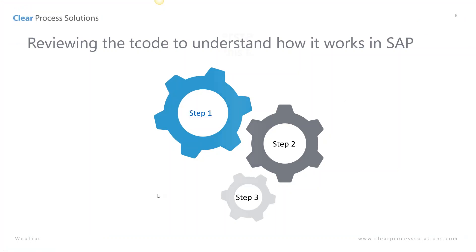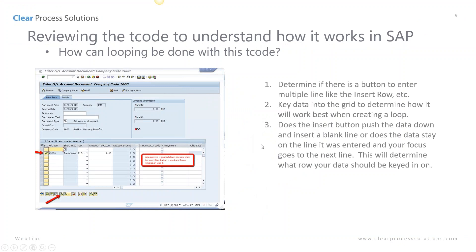Let's go back to the presentation and talk about what we just learned in that demonstration. What we're trying to do is determine how we can loop using this particular T code. The first thing you needed to do is determine if there's a button that allows you to enter multiple lines. We found the 'insert row' button that allowed us to use this grid to enter multiple lines, and we found that if we enter on the first line, highlight the line, and hit the new row, it pushes our data down.